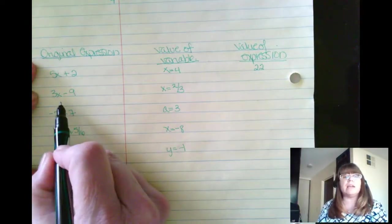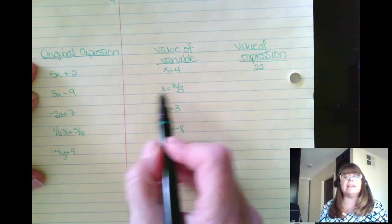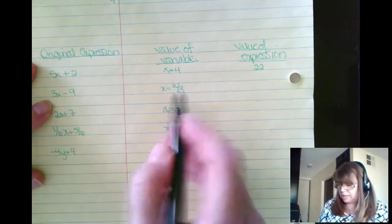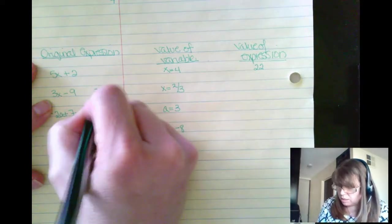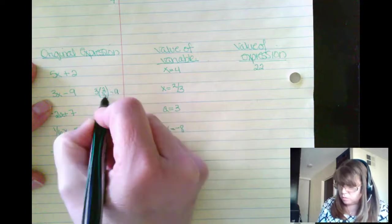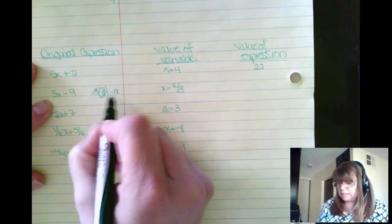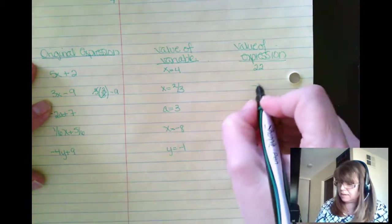What about 3x minus 9 when x is 2 thirds? You may need to see it. So 3 times 2 thirds minus 9. The 3s will reduce. So 2 minus 9 is going to be a negative 7.